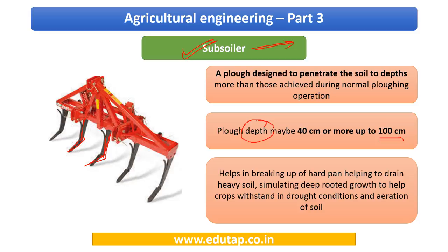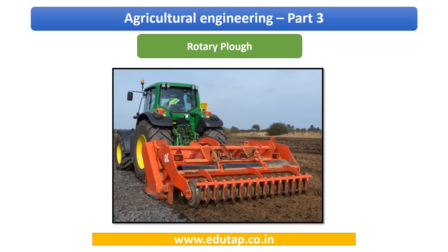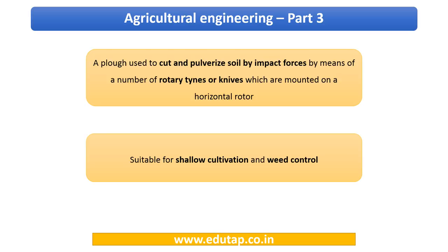The rotary plow has discs mounted on a horizontal bar. A rotational action takes place as the discs move over the field — hence the name rotary plow. It is used to cut and pulverize the soil — breaking it into smaller particles — and is used for shallow cultivation and weed control.